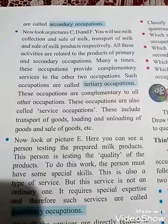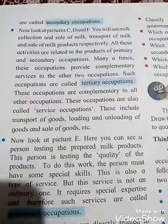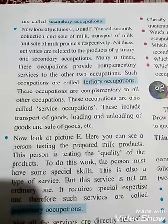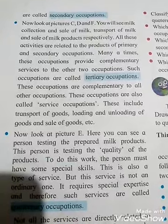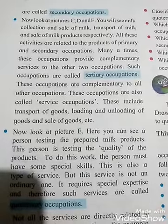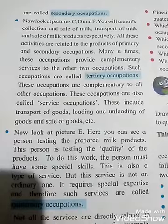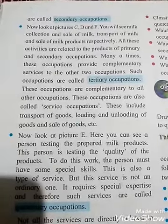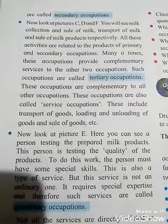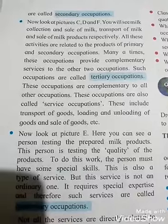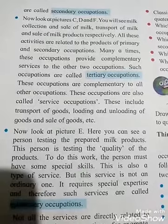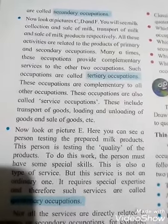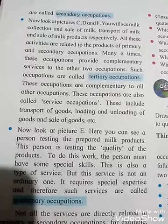Now look at Pictures C, D, and F. You will see milk collection and sale of milk, transport of milk, and sale of milk products respectively. All these activities are related to the products of primary and secondary occupations. Many times, these occupations provide complementary service to the other two occupations. Such occupations are called tertiary occupations. Example: sale of goods. These occupations are also called service occupations, and include transport of goods, loading and unloading of goods, and sale of goods.